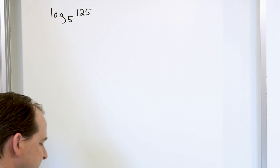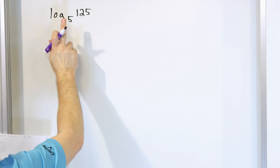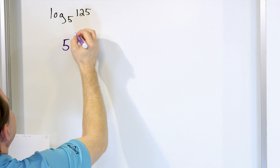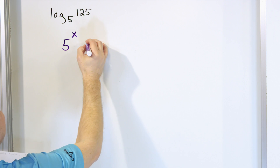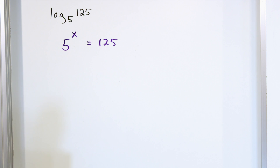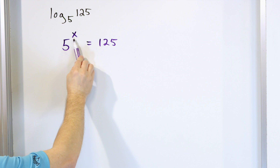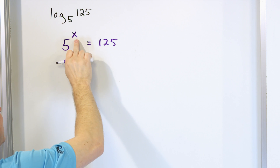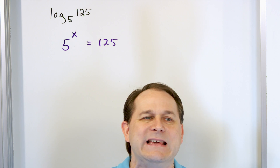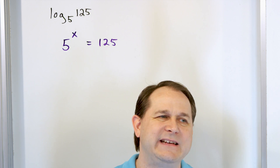The base here is 5. To translate and solve this, you say: the base, which is 5, raised to the power of something — call it x — is going to equal 125. This is how we solve every one of these logarithm problems. When you see a logarithm, it's telling you there's some exponent x such that 5, the base, raised to that exponent gives you what you're taking the logarithm of. Logarithms give you back the exponent required to do that.